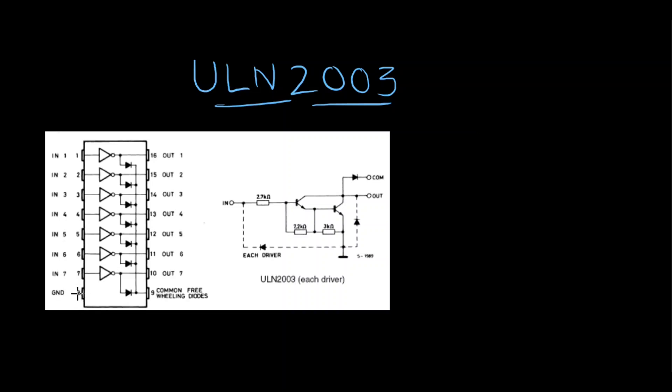One of the pins, pin number eight, is ground and pin number nine is called common freewheeling diodes. As we go ahead, we'll discuss what are these pins and how we can use them.